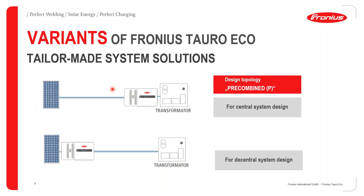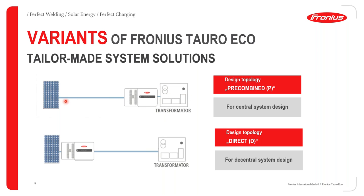Moving on to the variants of the Fronius Taro ECO — there are two variants. The first is a pre-combined variant, where the Taro inverter is located as close as possible to your local transformer. Here you've got really long DC cabling but short AC cabling. The second example is a direct topology, where the inverter is as close as possible to the PV modules and quite a distance from the transformer — so the AC line is long but the DC line is very short. Remember, in a PV system there will always be more losses on the AC line compared to the DC line. The DC line usually carries about 800 volts on average, while the AC line usually carries about 400 volts. The higher the volts, the lower the currents, and the lower the currents, the less losses you have on your cable.